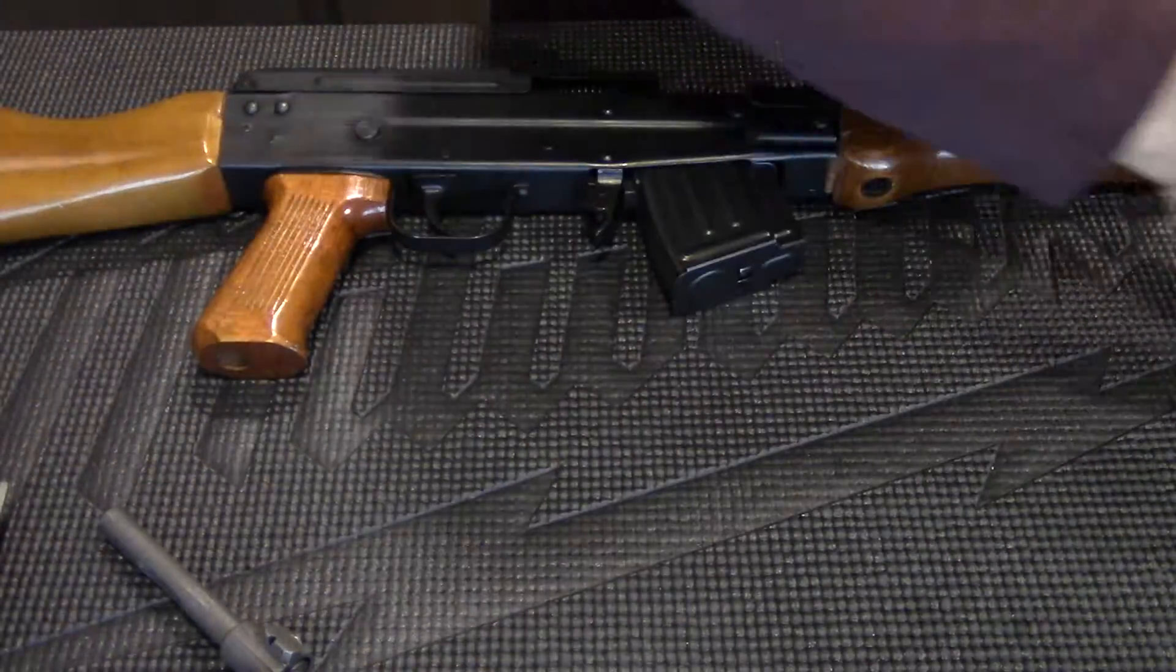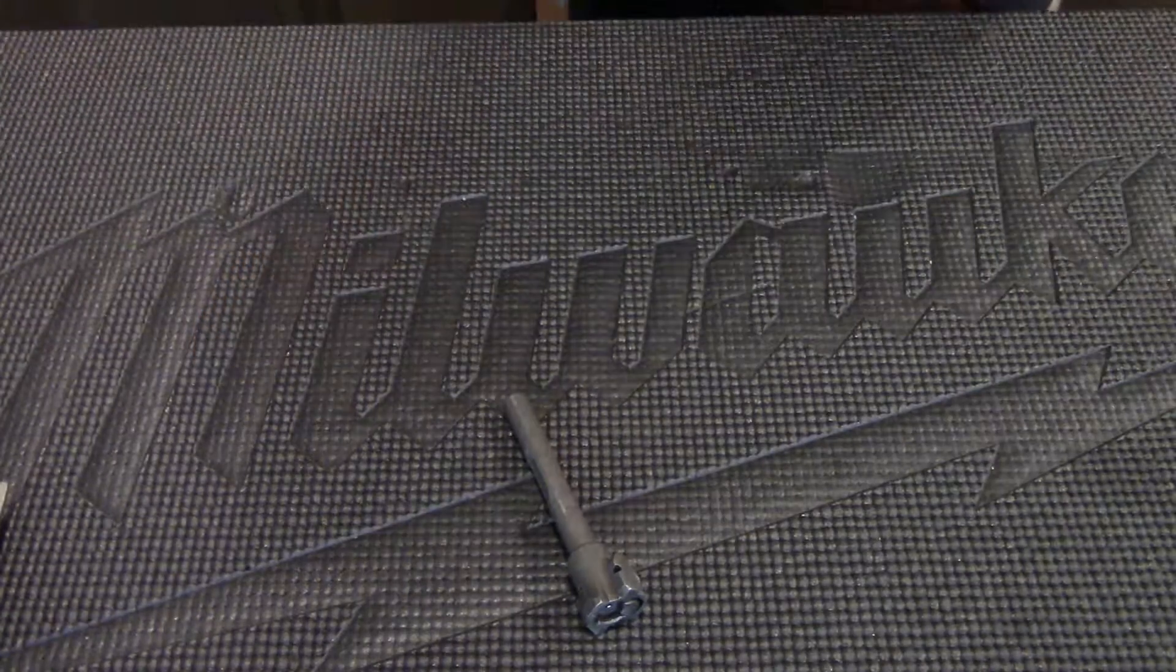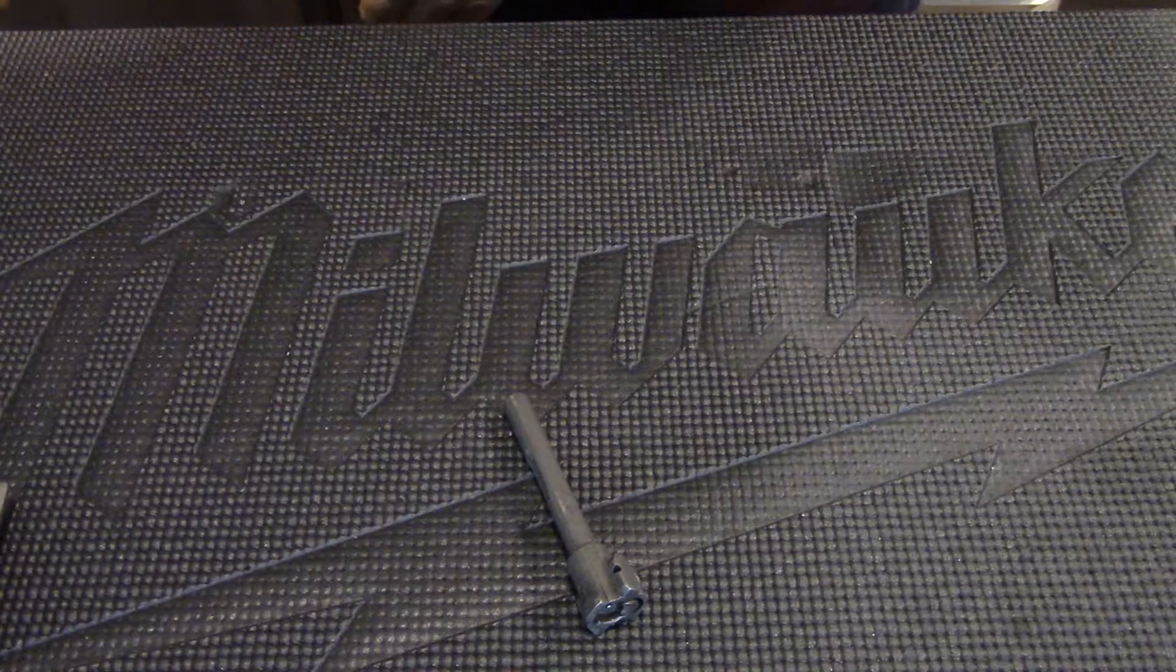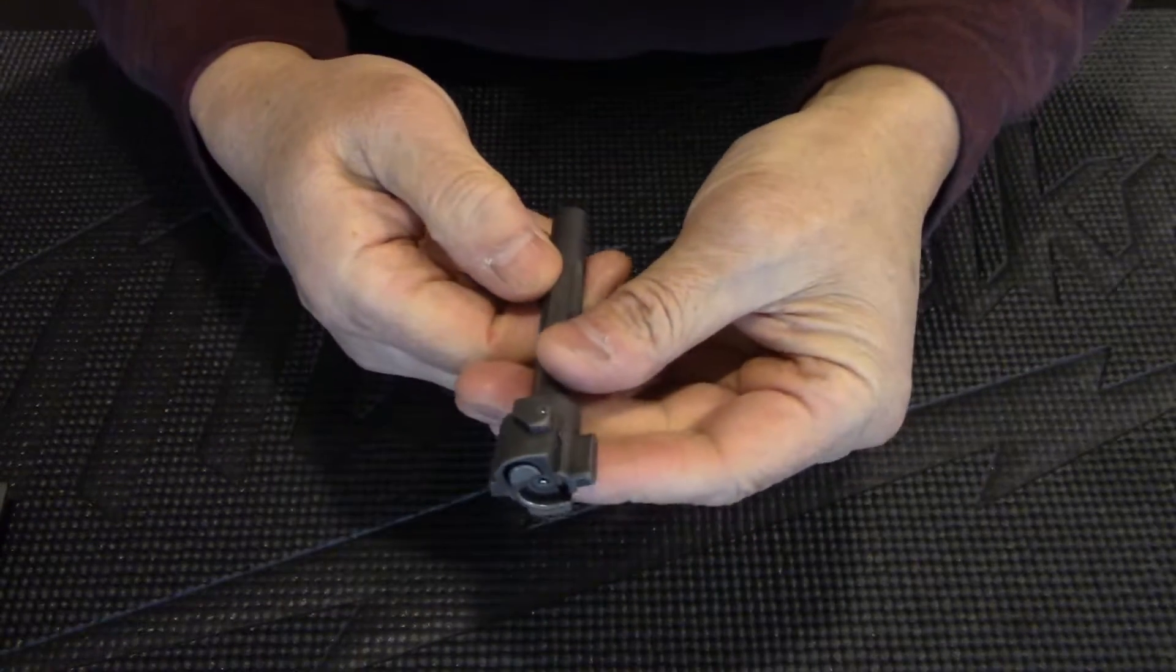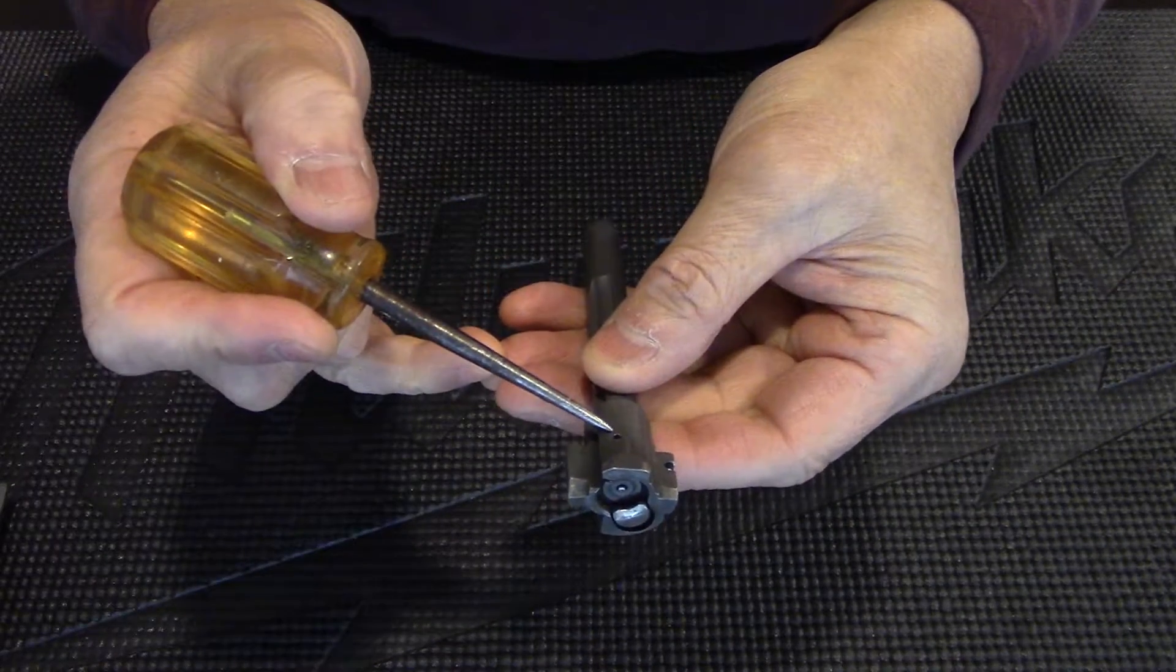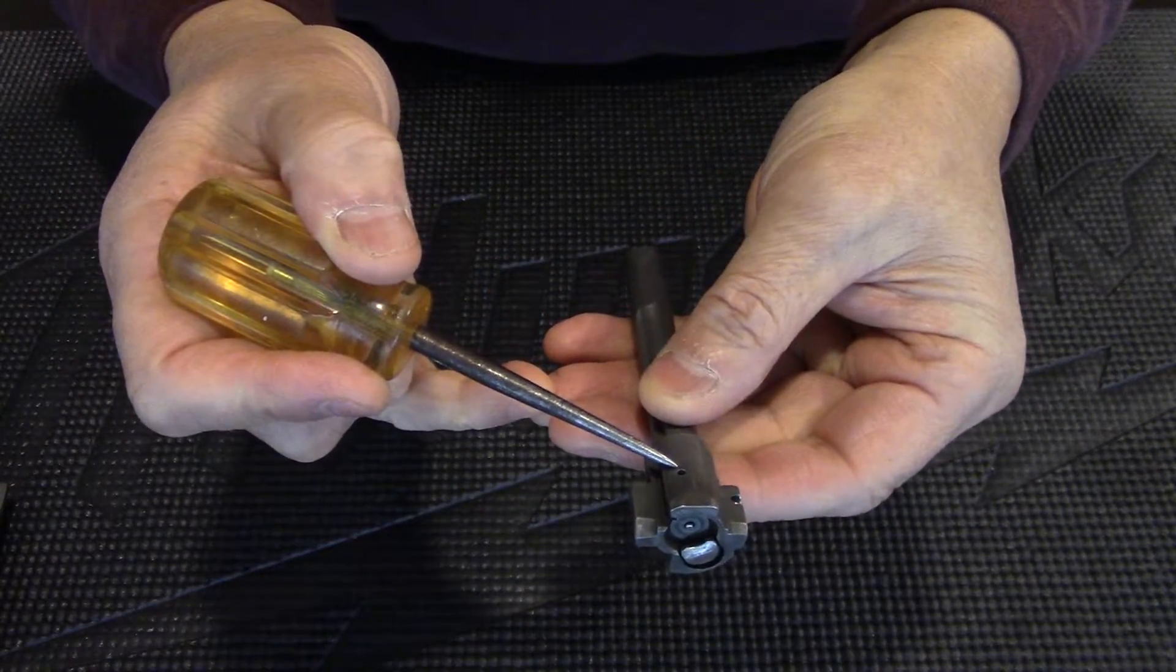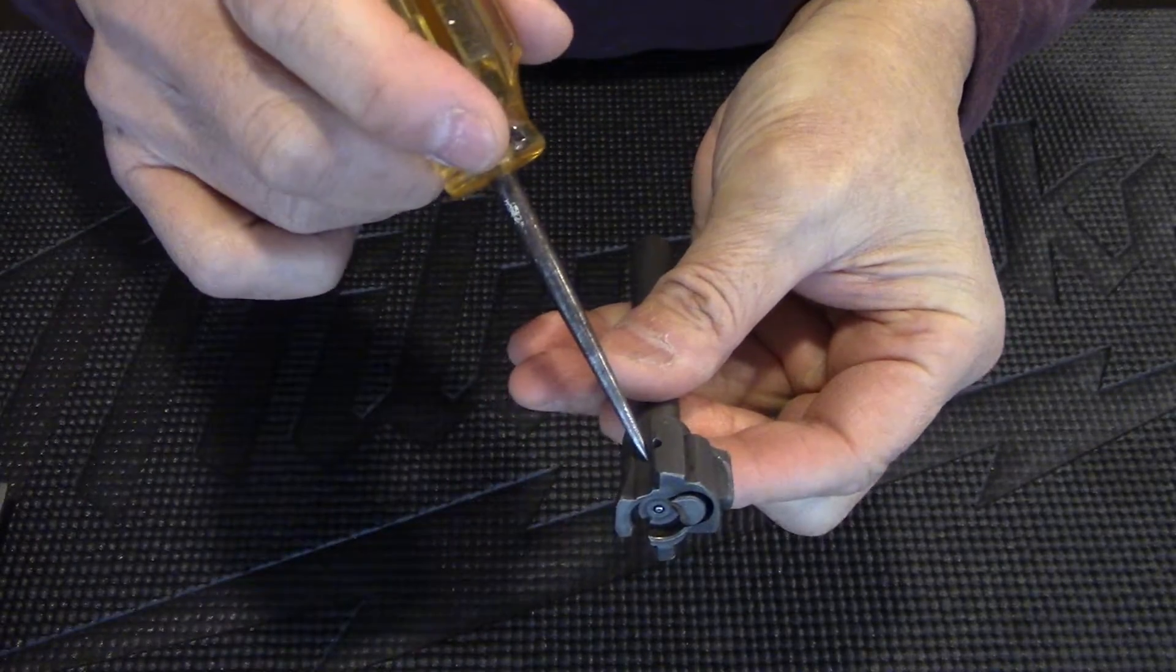We'll come back to the pin later. But for now, let me show you how to disassemble the bolt. At the bottom of the bolt head, you'll notice there's a one-and-a-half-millimeter hole. To the right, there's a three-millimeter hole.